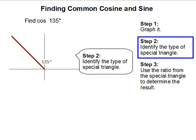Step 2: Identify the type of special triangle. So we're going to use this line to draw a triangle and I'm going to draw a line from here to here to create a triangle, and in this case it's going to create a 45-45-90 triangle.